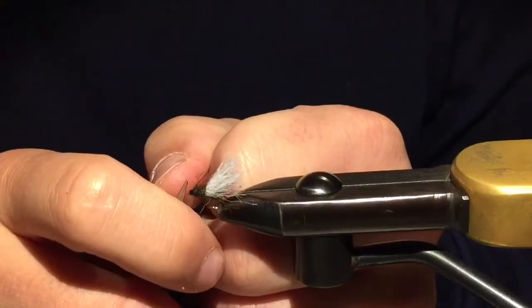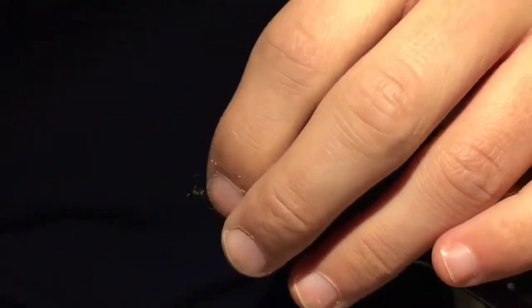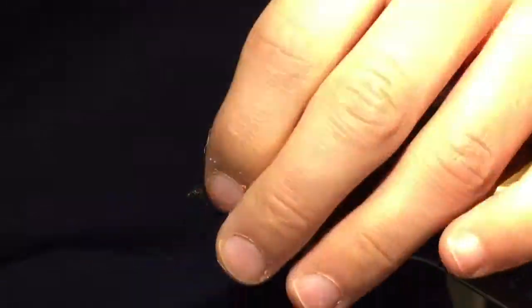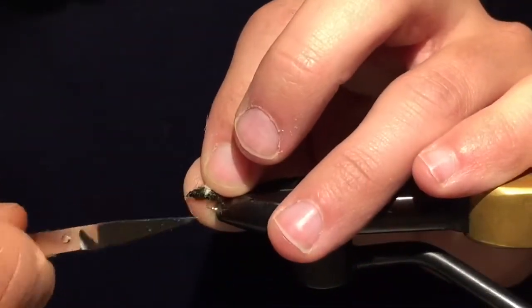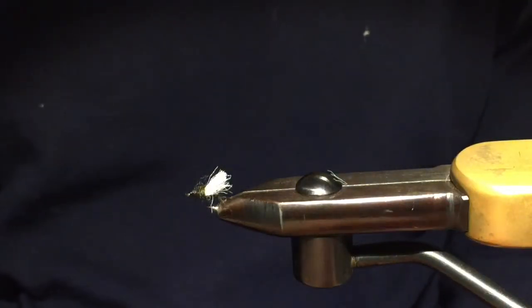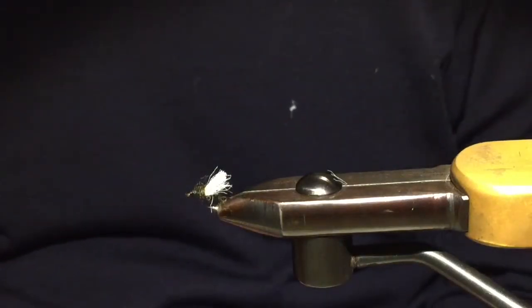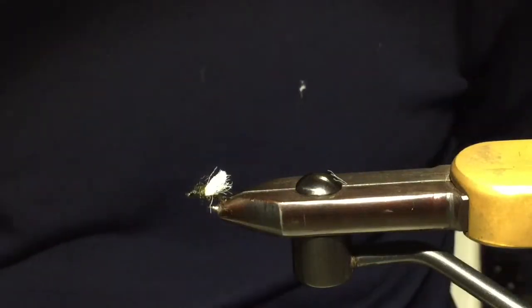Tighten good, snip off the thread. Now it's time to trim the fly. So that's the seals fur midge adult version, easy to tie, fairly cheap, the materials don't cost too much. You can use CDC instead of the antron yarn, but I find that the antron yarn doesn't soak in as much water as the CDC does after a couple of casts. So that's the fly, let's take a closer look at it.